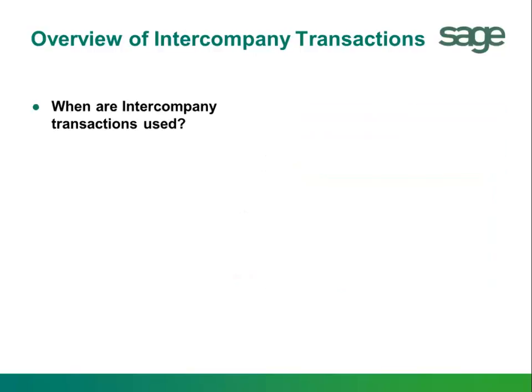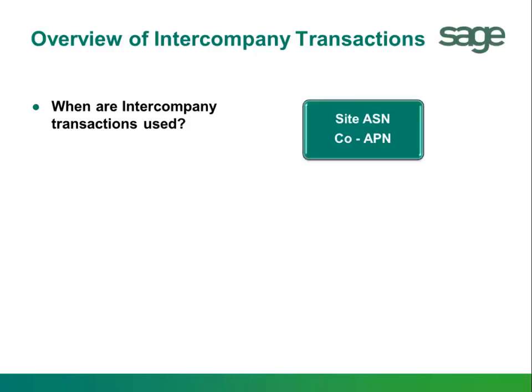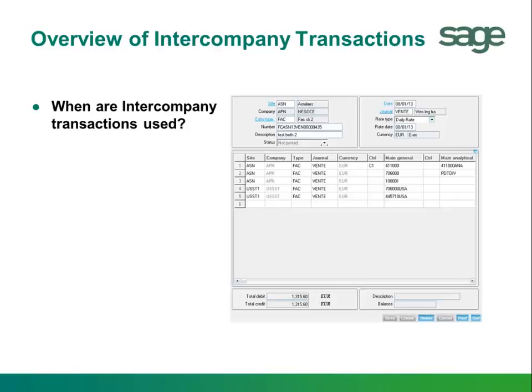When are intercompany transactions used? While these transactions can occur for a variety of reasons, they often occur as a result of normal business relations that exist between companies. This allows you to record a financial transaction when a parent company generates invoices for expenses or revenue that belong to one or more subsidiaries.